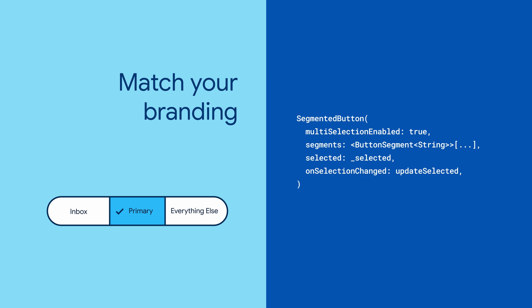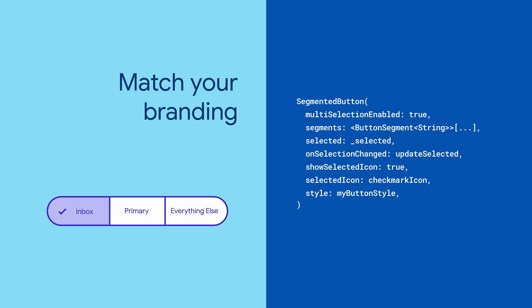As for styling the segmented button, you can specify a select icon or disable it entirely. You can also set your own button style to get it looking exactly the way you want it.